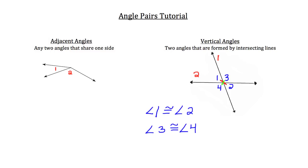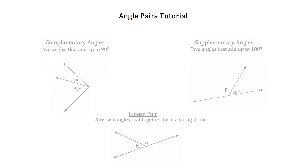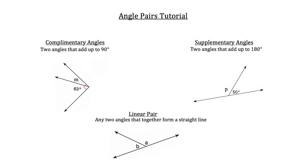There are a couple more angles I'd like to show you. Let's take a look first at complementary angles. Complementary angles are two angles that add up to 90 degrees. You can see on this problem down below — this is a 90 degree angle as denoted by the red box. And it's broken up into two separate angles: angle m and the second angle down below which has a measure of 63 degrees.